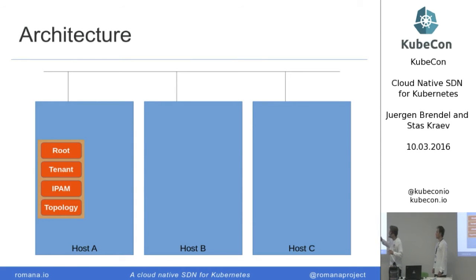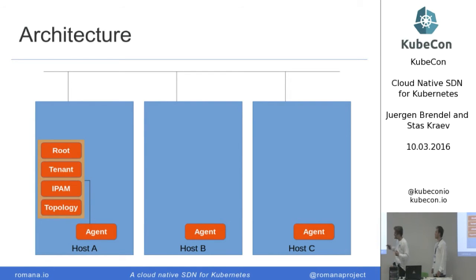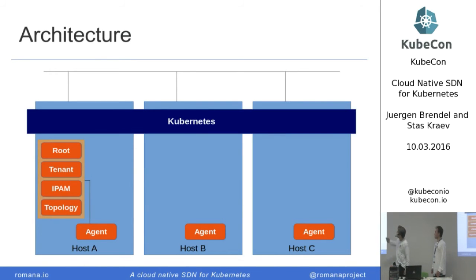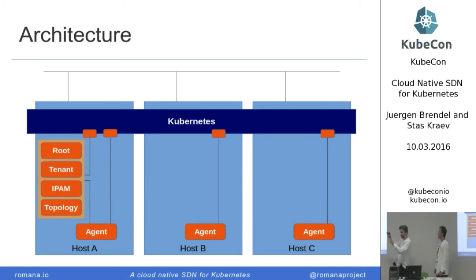Our architecture is pretty standard for systems like this — a bunch of cooperating microservices. Our root service is our authentication and that's where you go in; you get URLs in a RESTful manner to see where else you have to go. There's a tenant service which tracks tenants and segments, IPAM for our special IP address assignment, and topology which keeps track of all the various hosts in the system. We have agents on each host. Then we have integration points for Kubernetes — these are basically the abstraction layer between us and them. And Stas is going to talk about some of the technical details of these integration points.